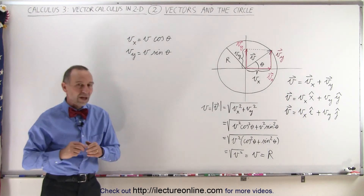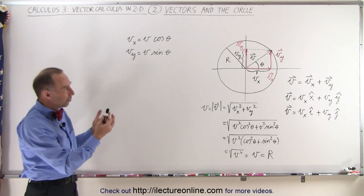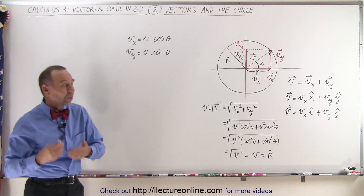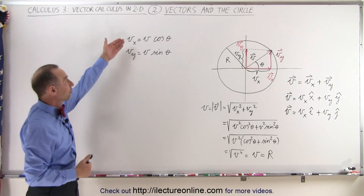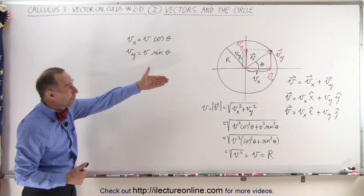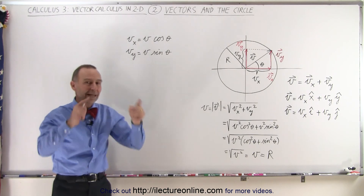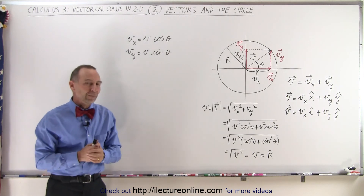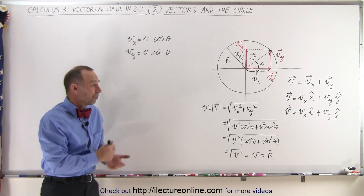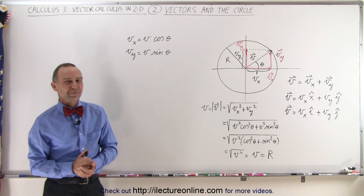And so, there's how we can compare a vector to its x and y components, to the components written in terms of the trigonometric functions, and the magnitude of the vector in terms of the radius of the circle that encompasses the vector. There is a good representation of how we can look at vectors.